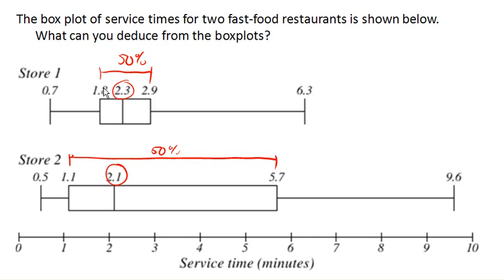In fact, 75% of people at store one are served within 2.9 minutes — only the unlucky 25% were served in a longer time. So if you're feeling really lucky, you might try store two, because you might get served really quickly, faster than you might at store one. But certainly, if you just can't spare a large amount of time, then store one might still be your better bet, since they seem to be a little more consistent in serving quickly.